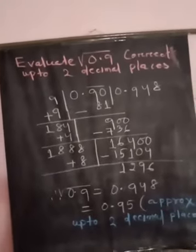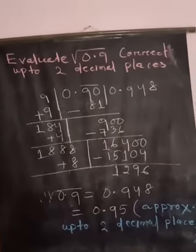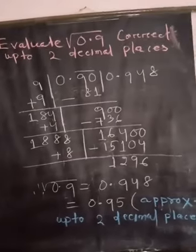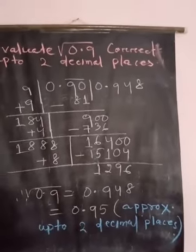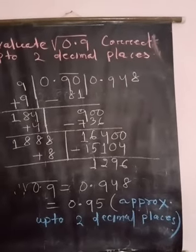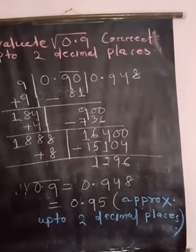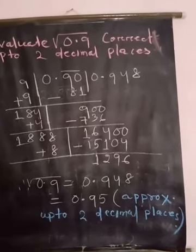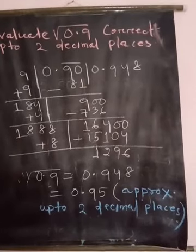Students, I am going to discuss how to evaluate √0.9 correct to two decimal places. Write down the number 0.9, then give the division sign. Put 10 on the right side of digit 9, it will be 90. Put the bar sign over the digit 90.